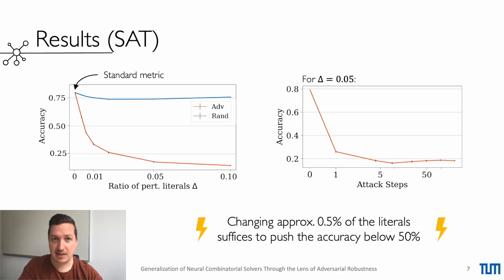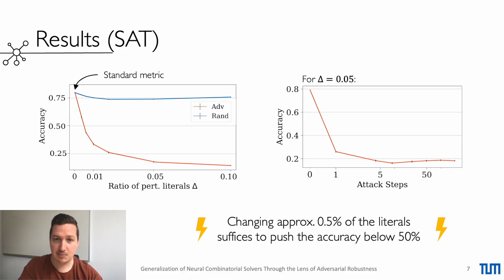Next, I will give some insights from our empirical evaluation for the SAT-decision problem. Here we show the accuracy for satisfiable problem instances with the neural SAT solver. If we perturb only 0.5% of the literals, we already push the accuracy from 80% to below 50% — in other words, the model performs worse than a coin flip. On the right, we show how the accuracy drops over the number of attack steps or gradient updates. If we alter 5% of the literals, already a single gradient update suffices to push the accuracy below 30%. Hence, finding these hard model-specific instances is rather cheap. This is in stark contrast to random perturbations, where we hardly find such challenging model-specific problems.